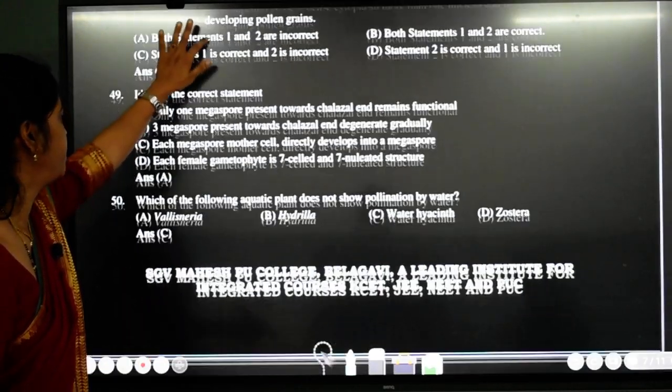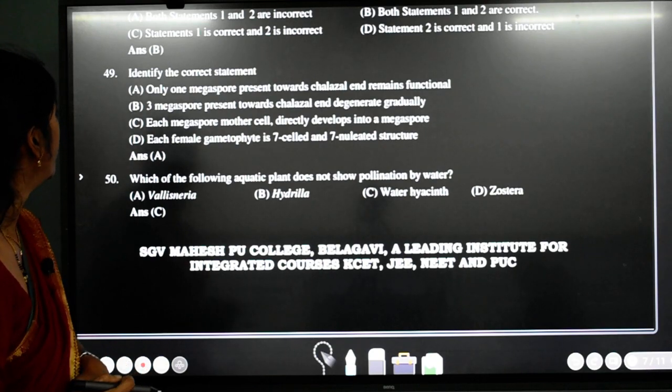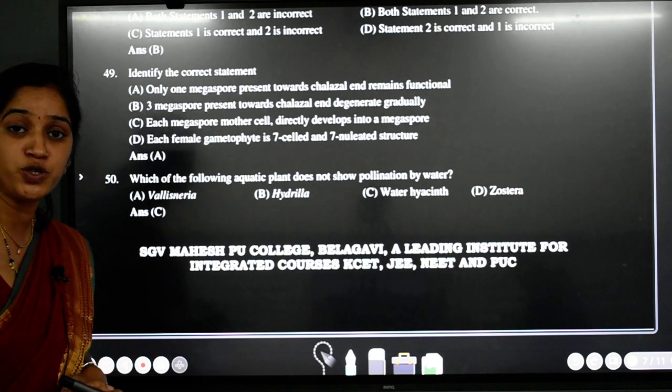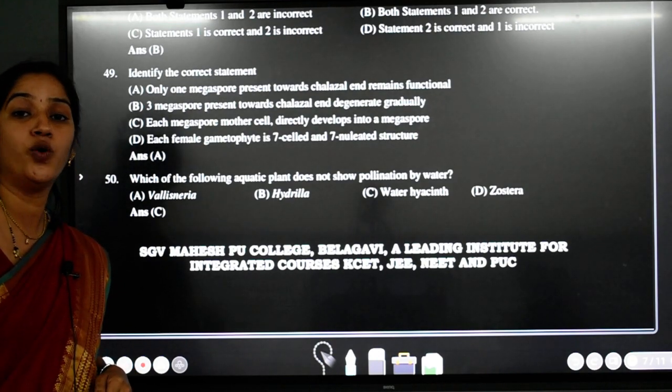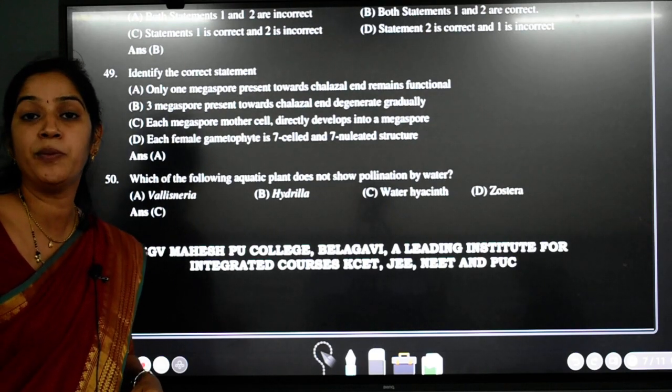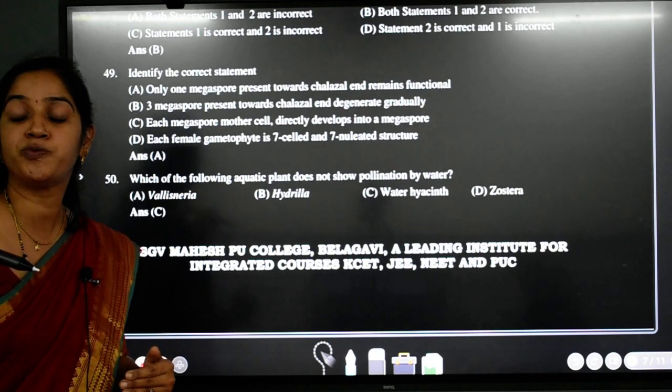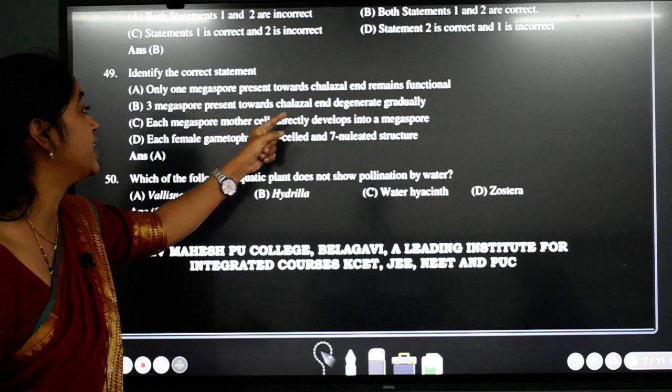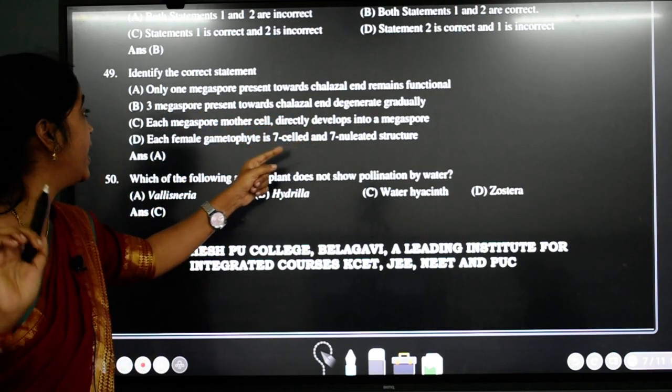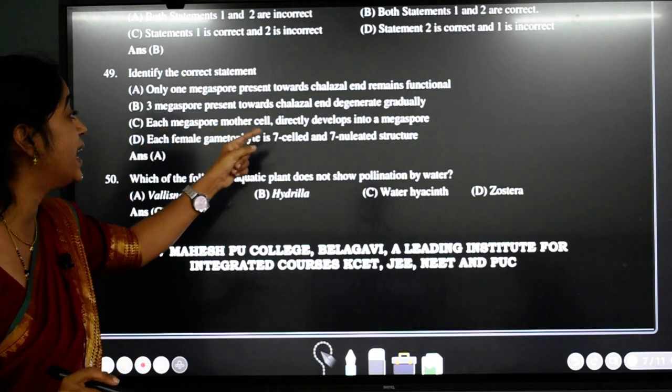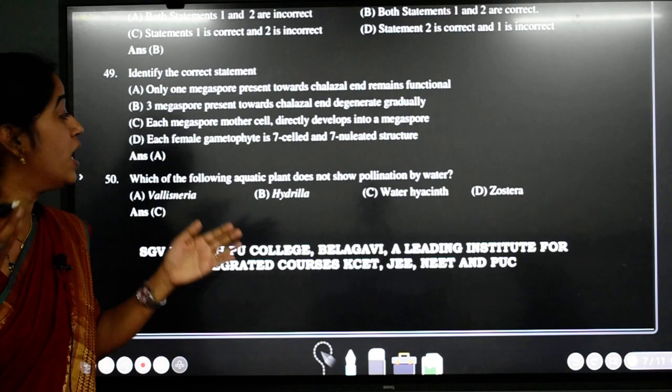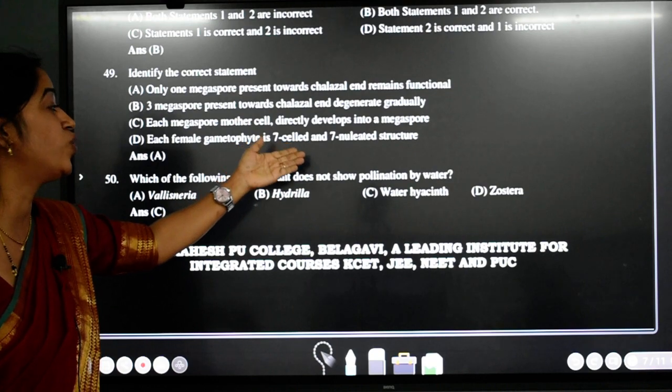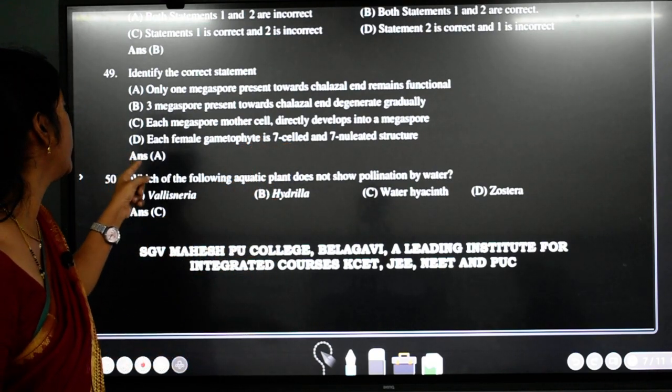Next question. Identify the correct statement again. Only one megaspore present towards the chalazal end remains functional. It is correct statement students. In the monosporic development only the one functional megaspore will develop into embryo sac and the lower three cells towards the micropylar end will degenerate. B statement. Three megaspores present towards the chalazal end degenerate. No. Towards the micropylar end will degenerate. Each megaspore mother cell directly develop into megaspore. No. It has to undergo meiosis. And D, each female gametophyte is seven cells, seven nucleated. No. It is seven cells, eight nucleated. So correct answer is A.